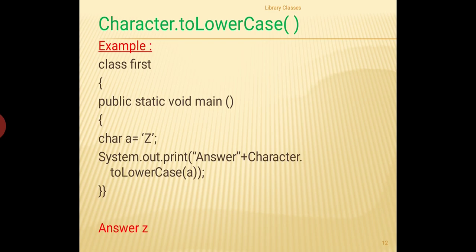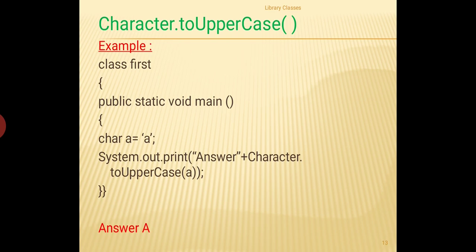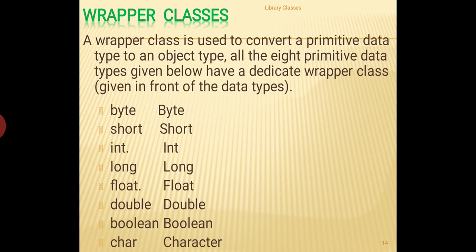Many students confuse isLowerCase() and isUpperCase() with toLowerCase() and toUpperCase(). The 'is' functions are boolean — they tell you whether something is there or not. But toLowerCase() and toUpperCase() are used to convert a character. The data type here is character-based, not boolean. A capital Z stored and after using toLowerCase() it converts to small z; using toUpperCase() converts a small 'a' to capital A.